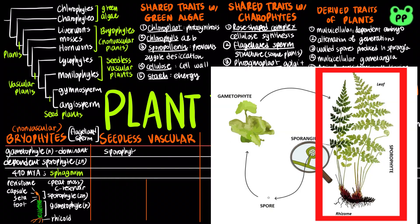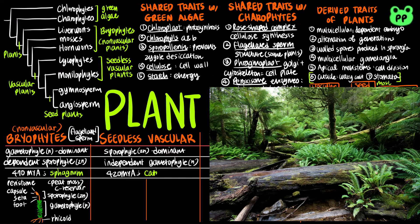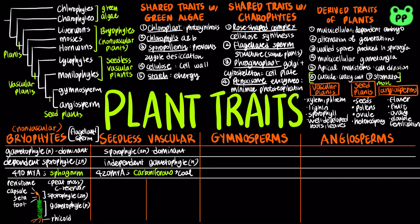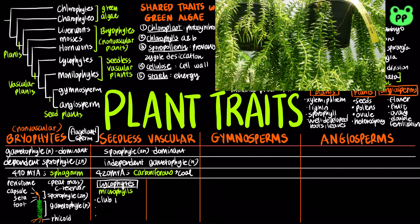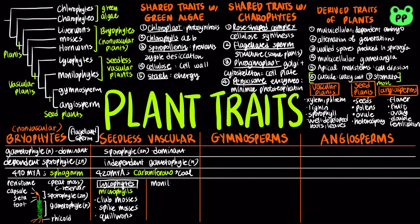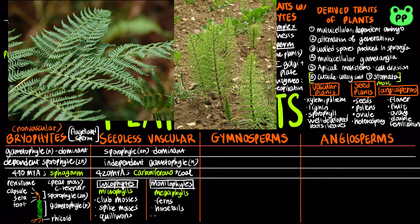Seedless vascular plants are sporophyte dominant. Their gametophyte generation is independent. They date back to 420 million years ago, which contributed to an increase in photosynthesis that may have helped produce the global cooling at the end of the Carboniferous period. The decaying plants of these Carboniferous forests eventually became coals that can be used for fossil fuel. There are two groups of seedless vascular plants. The earlier group is lycophytes; their sporangia are found on microphylls, plant leaves with one single unbranched vein. Lycophytes include club mosses, spike mosses, and quillworts. The second group is monilophytes; their sporangia are found on megaphylls, leaves containing many large veins. Monilophytes include ferns, horsetails, and whisk ferns.